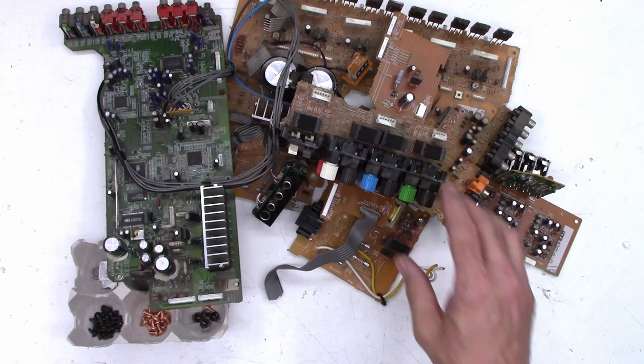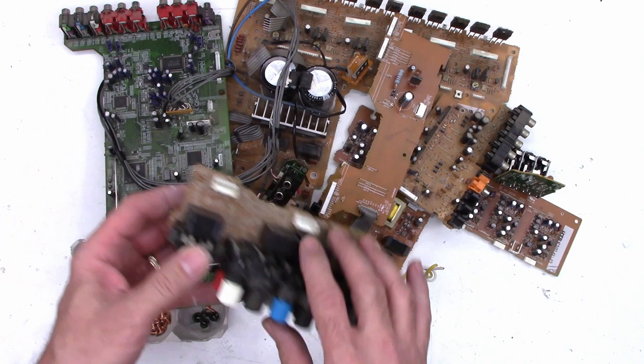This one's got a regulator on it, some capacitors, a resistor. I always save the circuit boards, I don't know why, they don't actually take up much space.